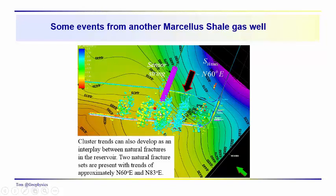Here is another example from another well looked at earlier. SH max is now oriented roughly parallel to the fractures, which might seem puzzling — normally we'd expect fractures at a higher angle. What's happening here is that the reservoir has two dominant fracture sets: one at North 60 East and one at North 83 East. The North 60 East set facilitates the development of the hydraulic fracture in this area, and the North 83 East set is branching off of that, and is interpreted to be largely responsible for the microseismic activity seen in these individual stages.